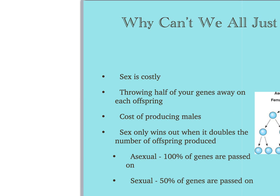Why can't we all just be asexual? Sex is always costly — you throw half of your genes away with each offspring. Sex only wins out when it doubles the number of offspring being produced. Asexual reproduction passes on 100% of genes, while sexual reproduction passes on only 50%. Darwin mentions how sexual reproduction produces twice as many copies as the original asexual gene, while some males do not reproduce at all.